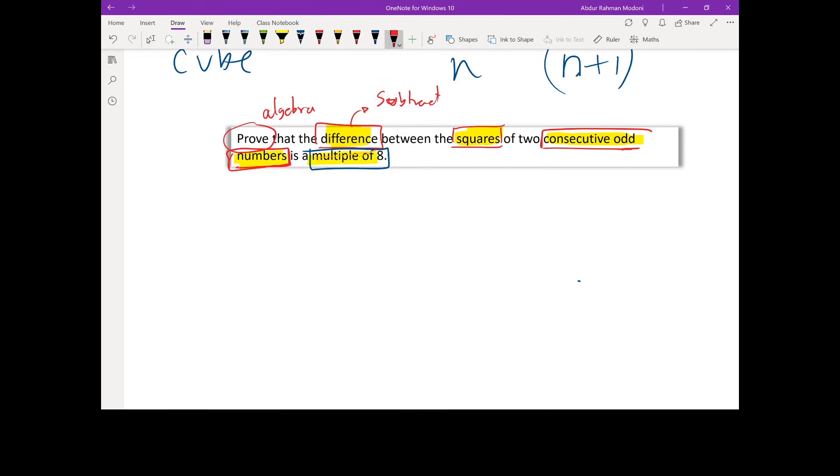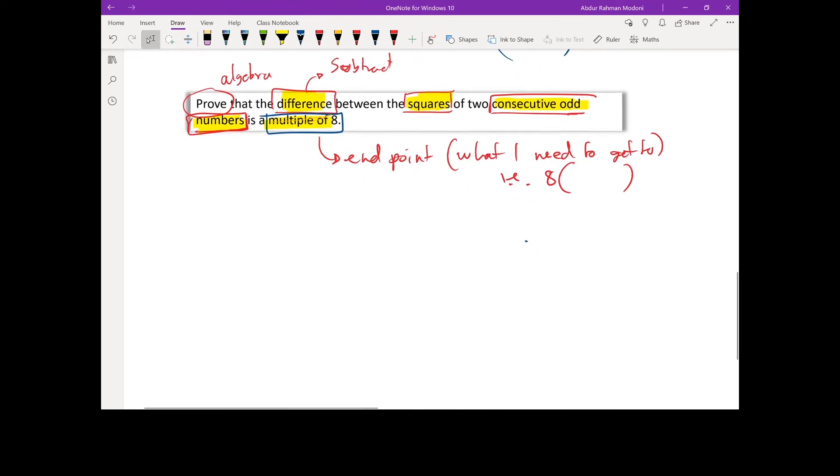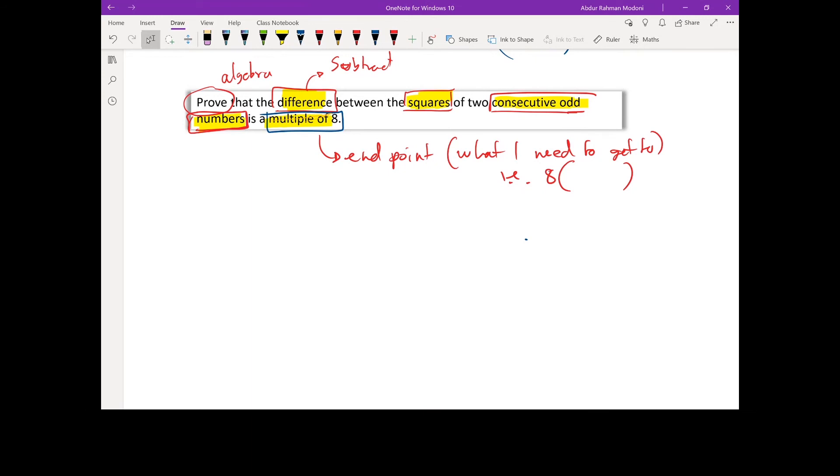Now, what number am I starting off with? That's what I need to get to. Prove that the difference between the square of two consecutive odd numbers is a multiple of eight, so I need to prove that something is a multiple of eight. That's not my start point, this is my end point, what I need to get to. How would I show something is a multiple of eight? Eight lots of something, eight bracket something, what I need to get to. If you can take eight out as a factor, it's a multiple of eight. That's my end point, but that's not my starting point. Consecutive odd numbers is going to be my starting point.